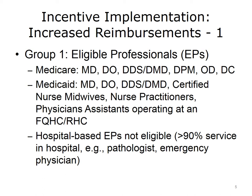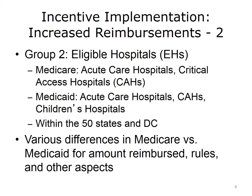Under the original legislation, hospital-based physicians were not eligible, although the hospitals they worked for were. However, additional legislation changed the definition so that more physicians who work in hospitals could become eligible. Now, a hospital-based professional who provides greater than 90% of his or her service in the hospital, such as a pathologist or emergency physician, is not eligible, but those who work less time in the hospital are. Hospitals eligible under Medicare and Medicaid include acute care hospitals and critical access hospitals. Also eligible under Medicaid are children's hospitals. Eligible hospitals, or EHs, need to be within the 50 states of the U.S. or the District of Columbia.